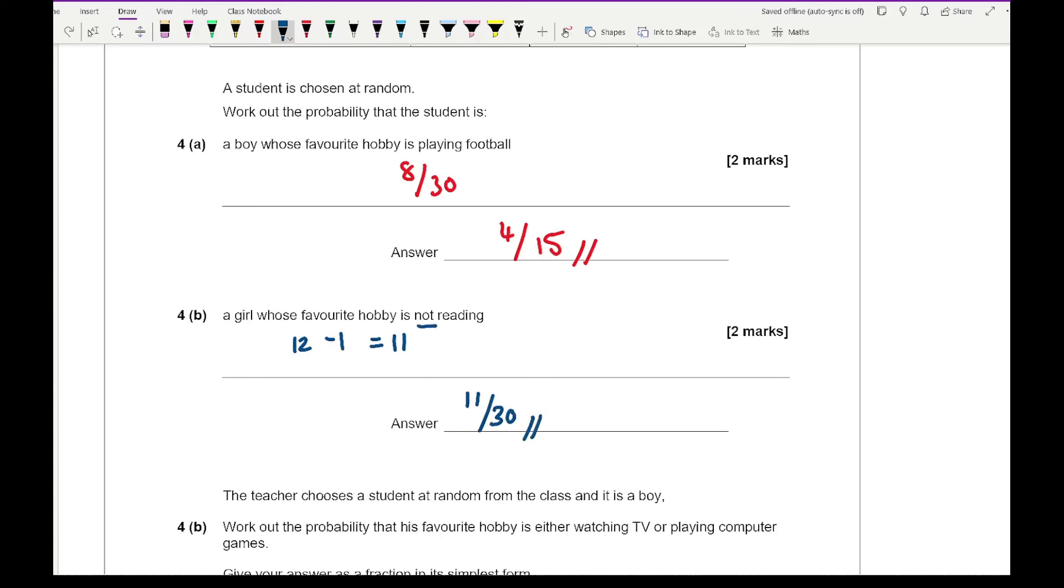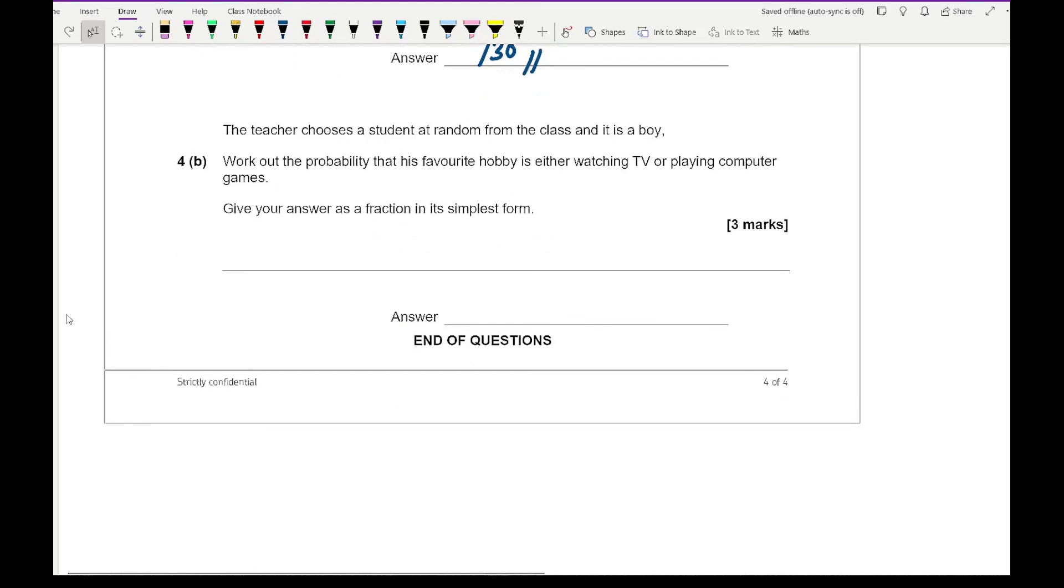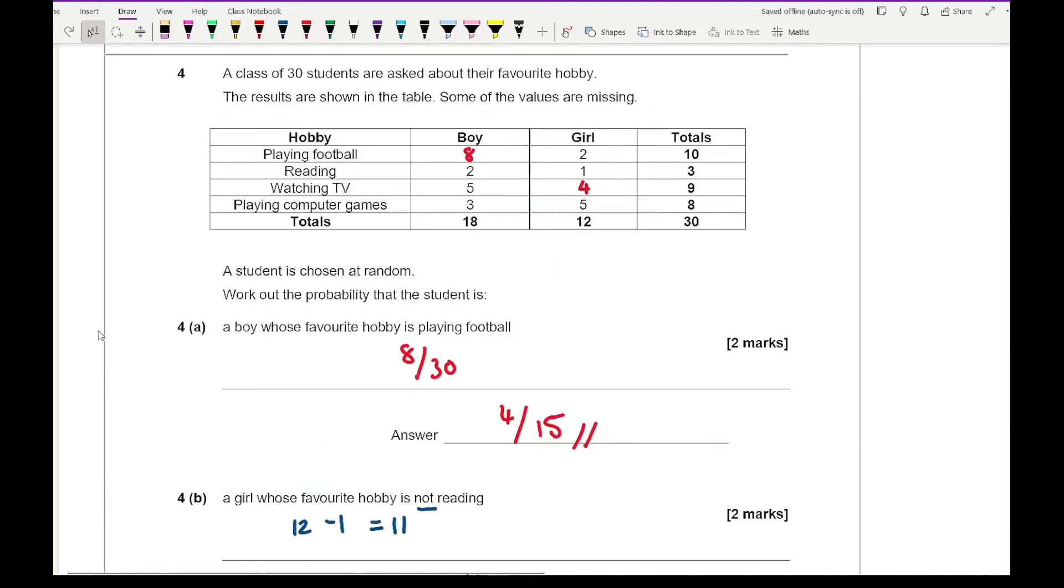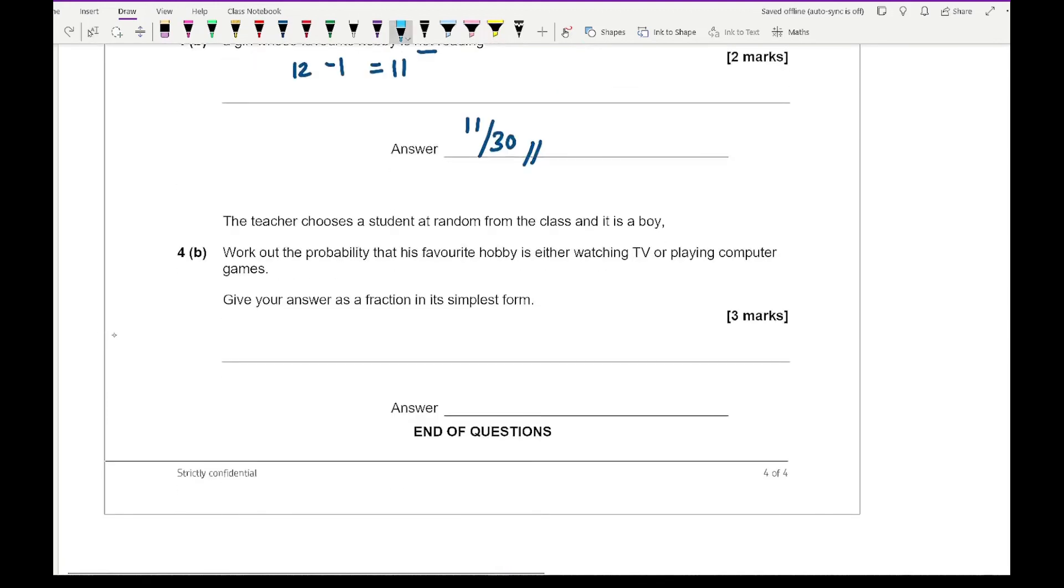It's that not part that's really important to read carefully. Moving on to our last question, it says a teacher chooses a student at random from the class and it is a boy. Work out the probability that his favourite hobby is either watching TV or playing computer games. We know it's definitely a boy so our new total becomes 18. How many of those 18 boys like watching TV or playing a computer game? Playing a computer is 3 and watching TV is 5, so it's 8 out of 18. I do 8 over 18 and simplify that by writing it as 4 over 9. And there we go.